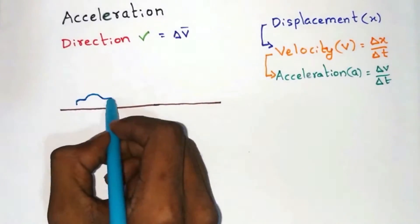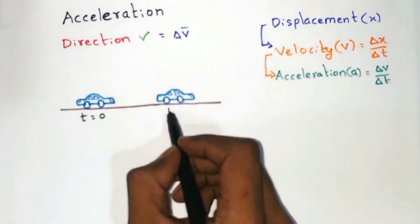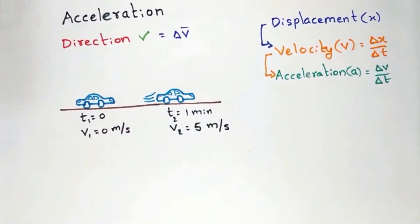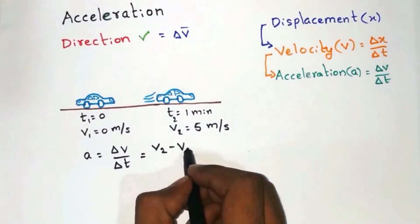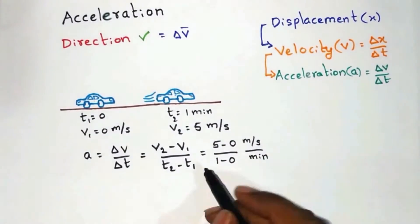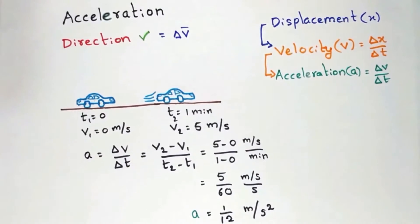In order to explain this, consider an example of a car which has zero velocity initially and after one minute has reached a velocity of 5 meter per second. So the acceleration equals the change in velocity divided by change in time. After unit conversion, it equals 1 by 12 meter per second square, which means for every second, the car velocity is increasing by 1 by 12 meter per second.